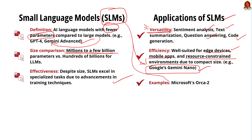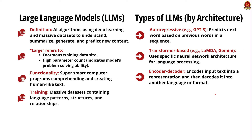Microsoft's Arcade 2-7B and Arcade 2-13B are other examples of small language models. Now we shall see about large language models. A large language model is a type of artificial intelligence algorithm that uses deep learning techniques and massively large data sets to understand, summarize, generate, and predict new content.